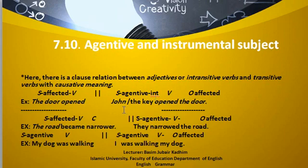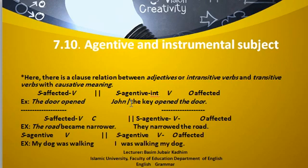For example, 'John or the key opened the door.' Here, the door is affected — the door is affected as the object. John is the subject which is agentive. John or the key: John is agentive, the key is instrumental.